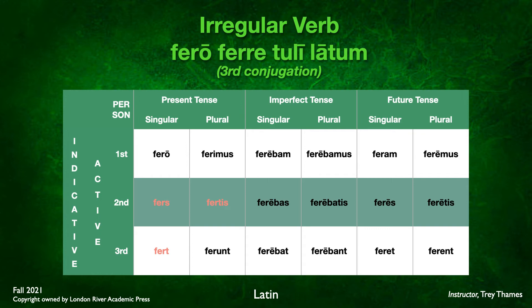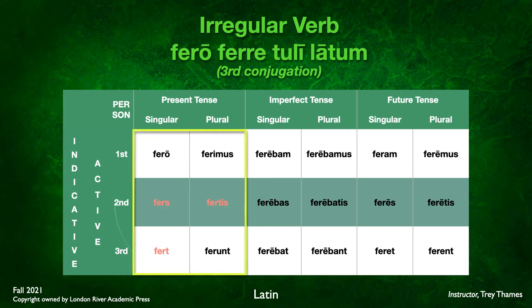In three places in the present active, marked in a different color in the conjugation table — second and third singular and second plural — we have an irregularity. The imperfect uses the e vowel with the -ba- infix as expected, and the future uses present tense endings with a in first person singular and e elsewhere, giving us feram, feres, feret, feremus, feretis, ferent, exactly what you'd expect for a third conjugation verb. So only in the present tense in those three forms do we have an irregularity.